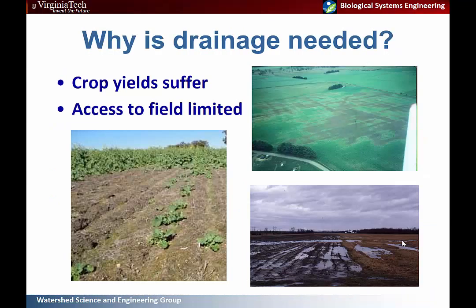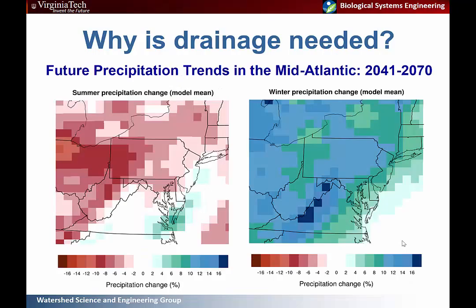Why is drainage needed? When you have saturated areas in your land, your crop yields can suffer. With poor drainage you can develop low germination rates, leading to bare spots, and standing water creates problems with accessing your field. This can occur at sensitive times like planting and harvest. We're also looking at changing precipitation trends in the mid-Atlantic, specifically an increase in annual precipitation, much of which will occur in the growing season.